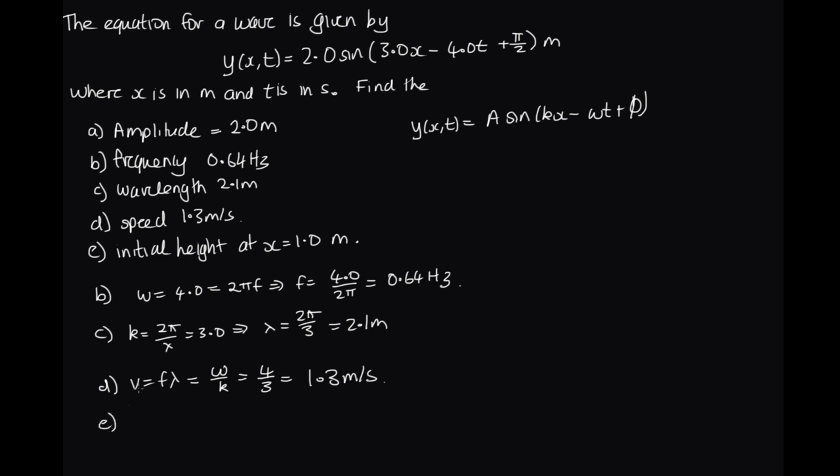In part e, we're asked to find the initial height at x = 1.0 meters. So initial tells us that t = 0. So what we're trying to find is the height when x = 1 and t = 0. So we need to substitute 1 and 0 into this equation. So this is going to be 2 sin(3×1 - 4×0 + π/2). That's 0, plus π/2.